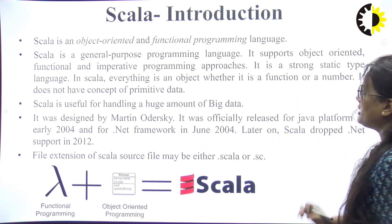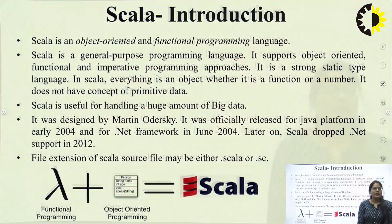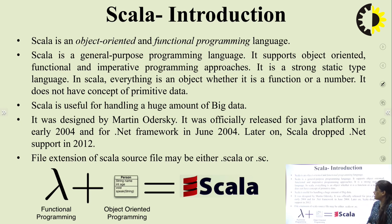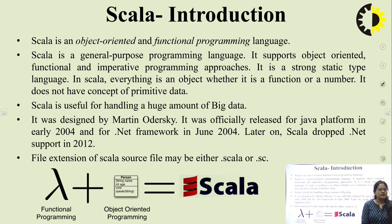The first topic is introduction. Scala is an object-oriented and functional programming language. It is a general purpose programming language that supports object-oriented, functional, and imperative programming approaches. It is a strong static type language. In Scala, everything is an object whether it is a function or a number. It does not have the concept of primitive data type.